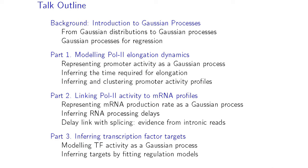I'm going to give some background on Gaussian processes, drawing on material from Neil. When you co-author with someone, you can use all their stuff because you're also an author. Then I'm going to talk about three applications: polymerase elongation dynamics, where you're producing an RNA molecule and transcribing it from genomic DNA; linking that to RNA profiles; and finally some older work on regulatory network models, where the methodology is very similar.